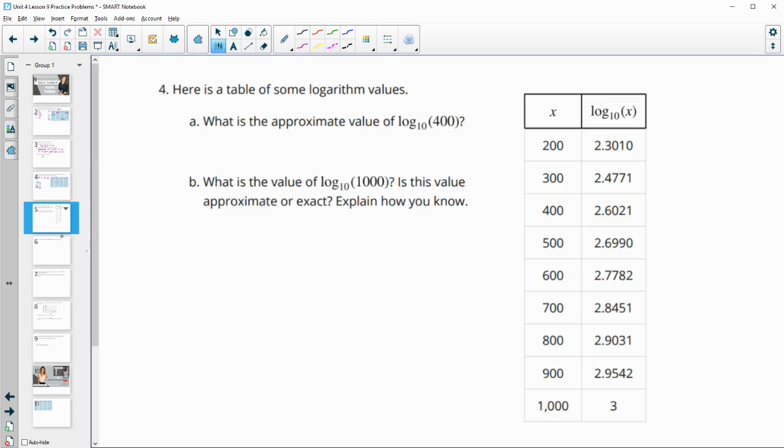Number four, here's a table of some logarithm values. What is the approximate value of log base 10 of 400? So we go find 400 and have it evaluated for us, and it is 2.6021.